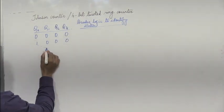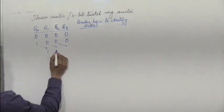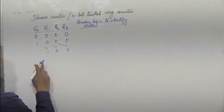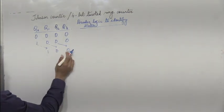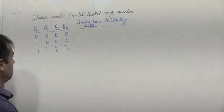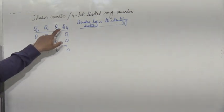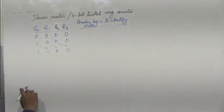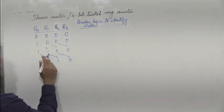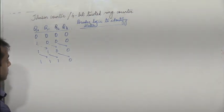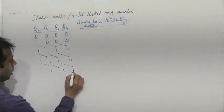The next state is obtained as: this 1 gets shifted here, this 0 gets shifted here, this 0 gets shifted here. So I get 1, 0, 0. But what about q0? This state is nothing but the inverse of q3, which is 1 — the complement of q3. So q0 is q3 bar. The next state gives us 1, 1, 0, and q0 is complement of q3 which is 1.